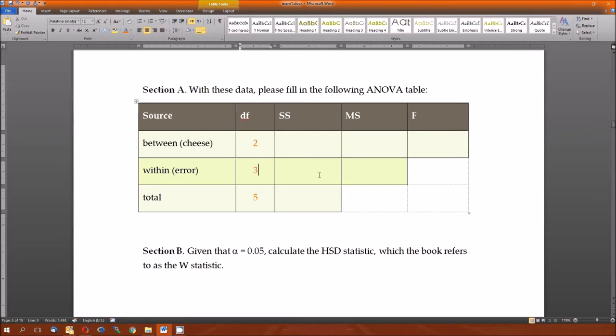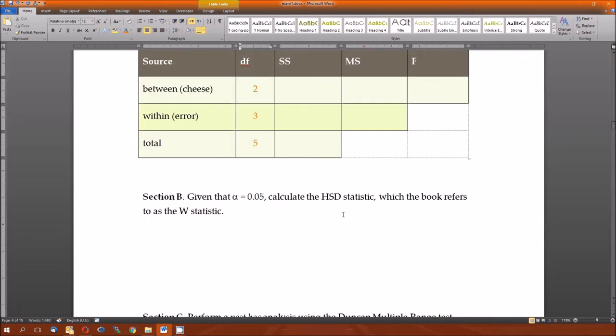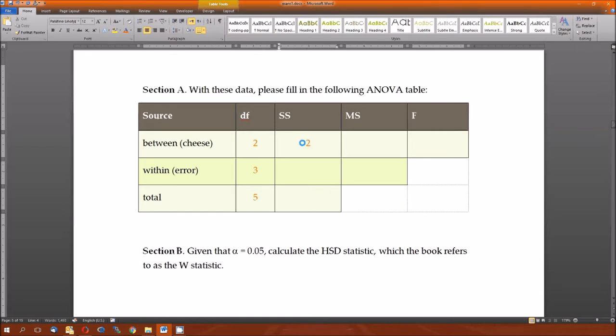The sums of squares. The sum of squares for between and within. Those formulas should be on your note sheet. For between, it's the sum over all the values of the mean of each level minus the overall mean squared. And the sum of squares within is the sum over all the values again of the value minus the group mean again squared. Nicely, it all comes out nice and easy. It's 28 and 12. And we know that the total sums of squares is just the between plus the within. 28 and 12 is 40.